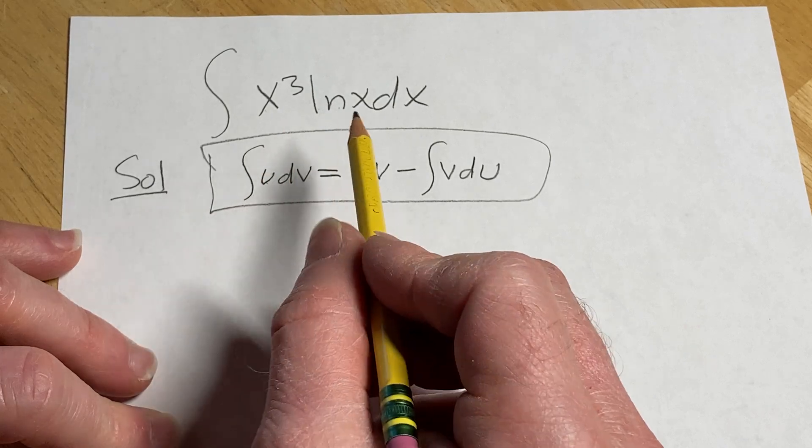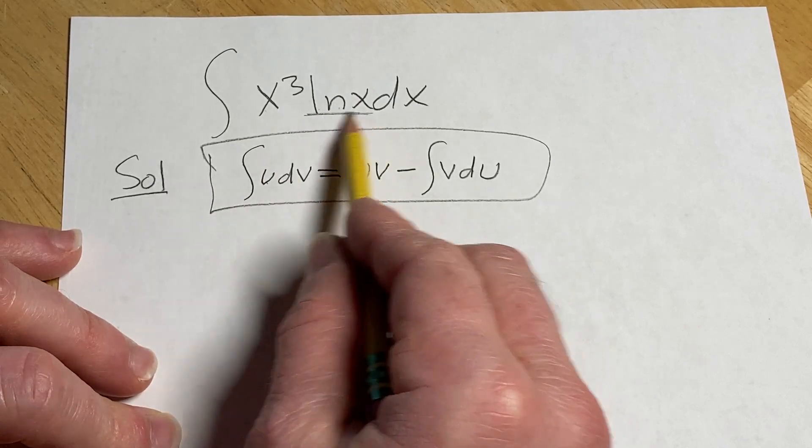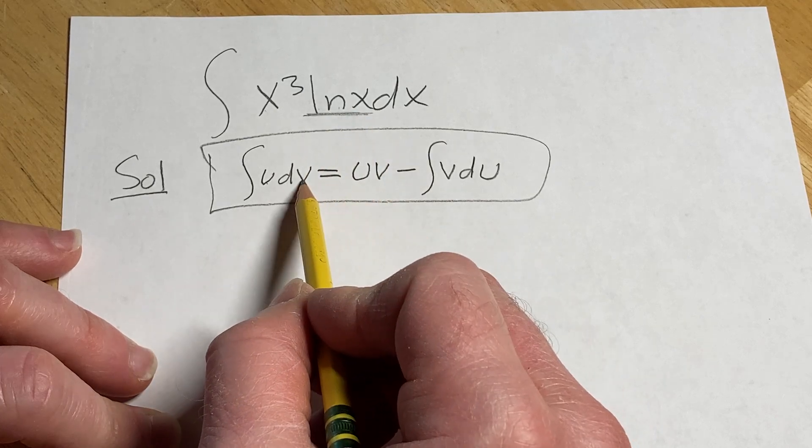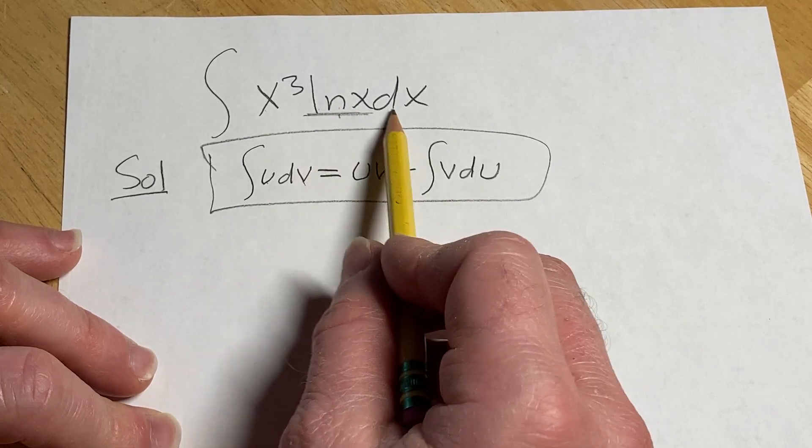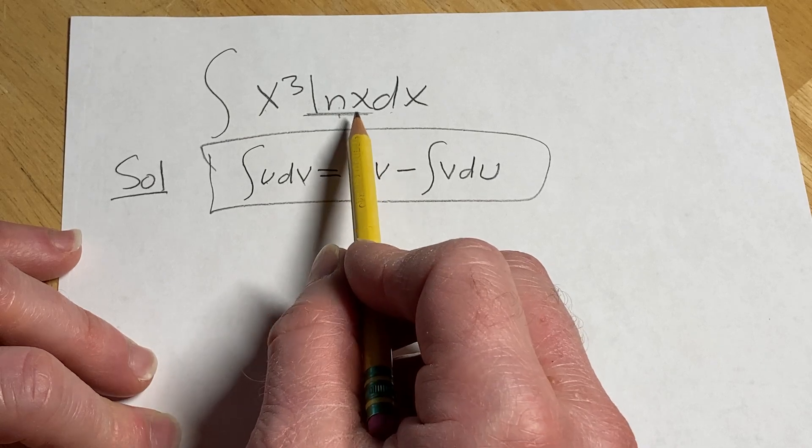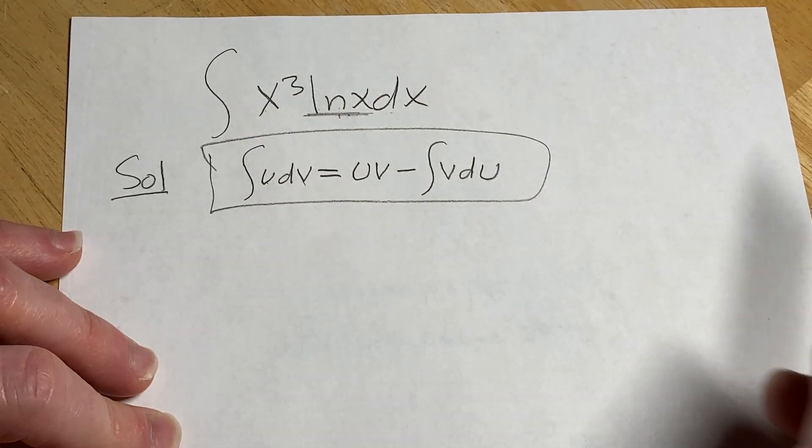So in this particular case it's going to be easier to pick u equal to the natural log of x because if we pick dv to be the natural log of x dx then what's going to happen is we have to integrate lnx and that requires integration by parts on its own.